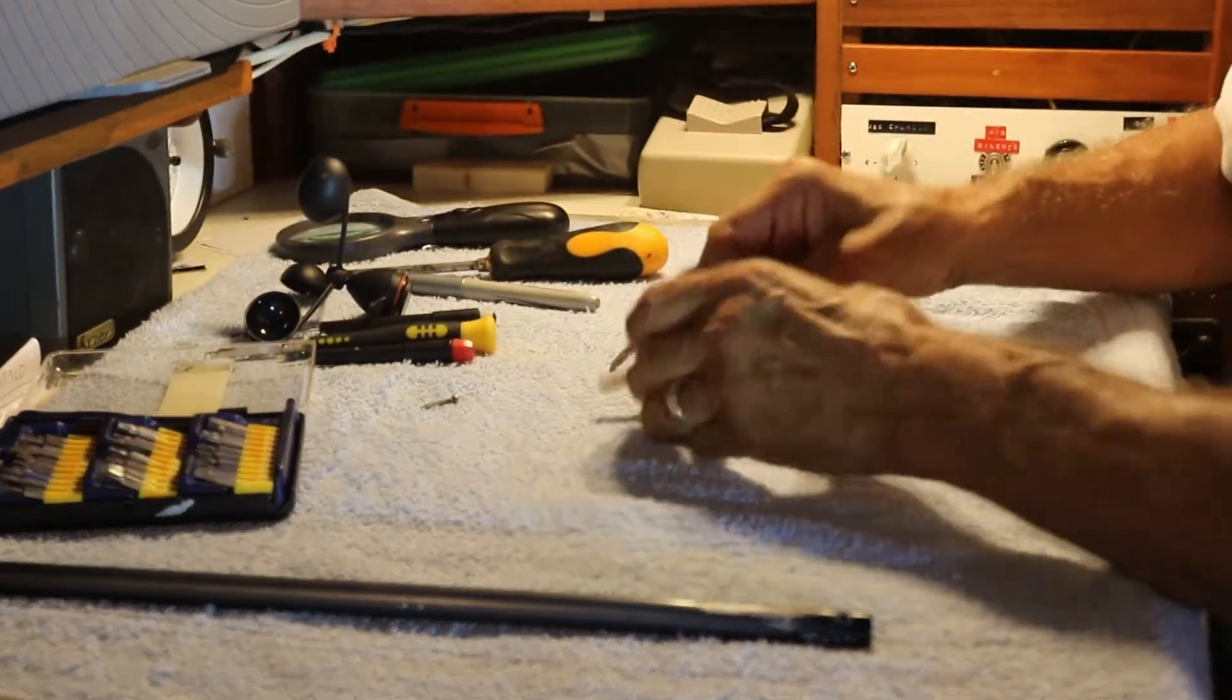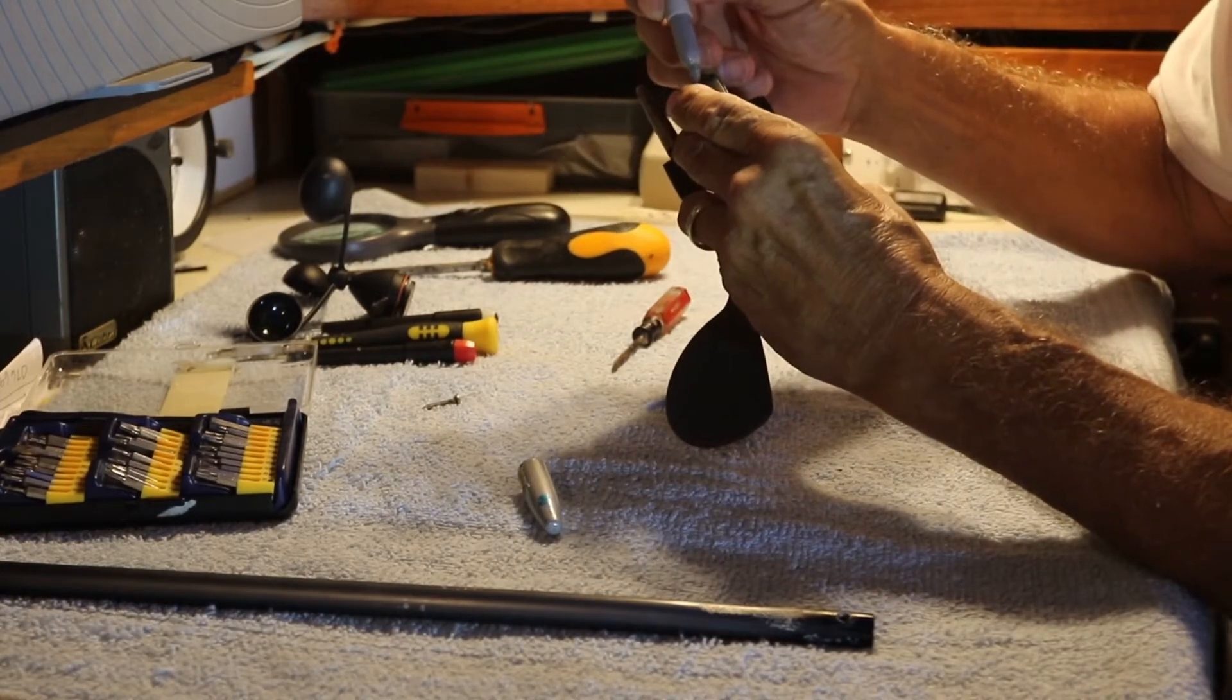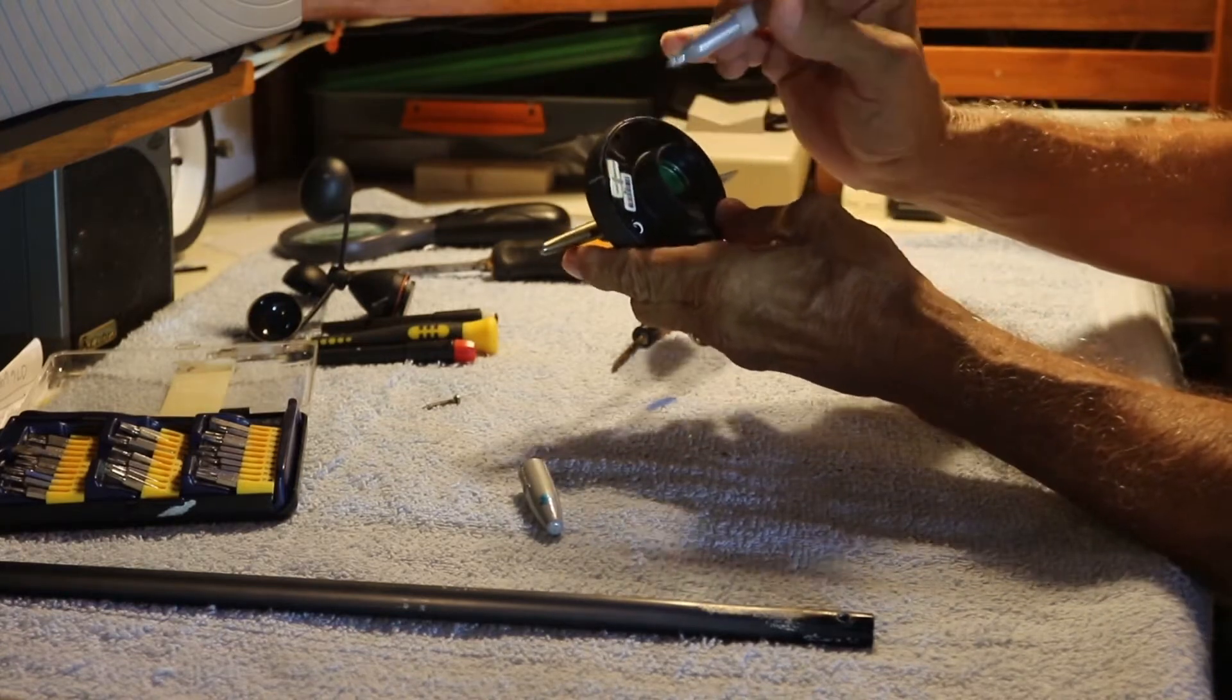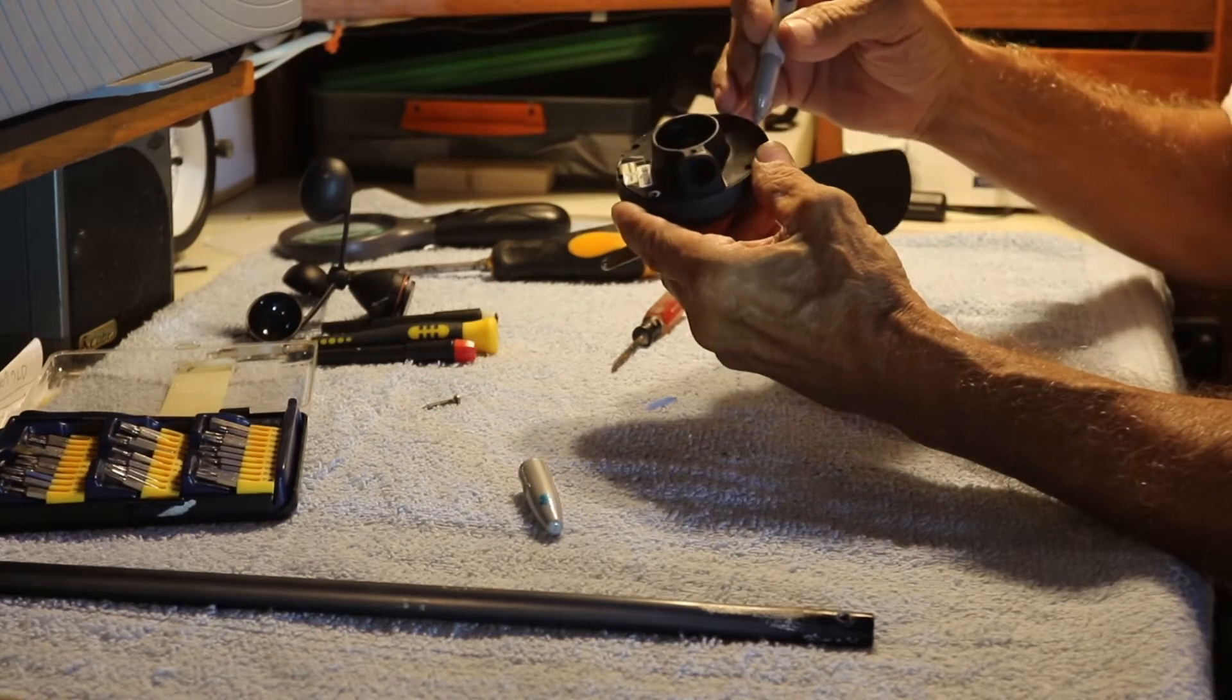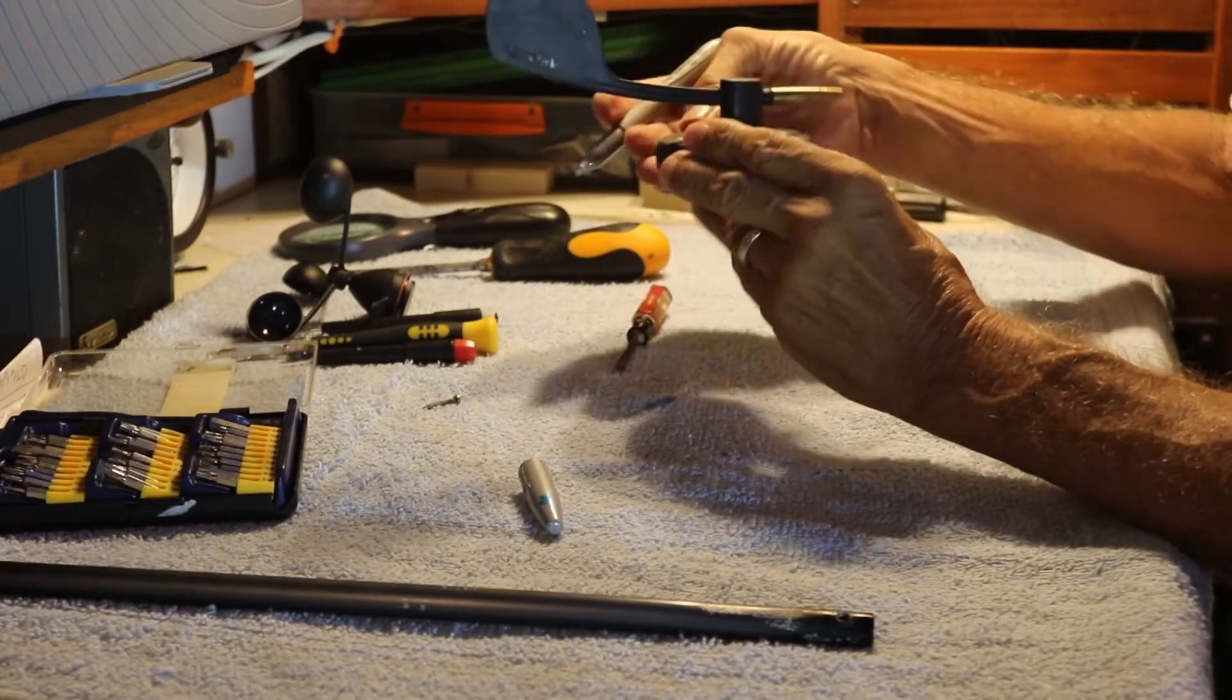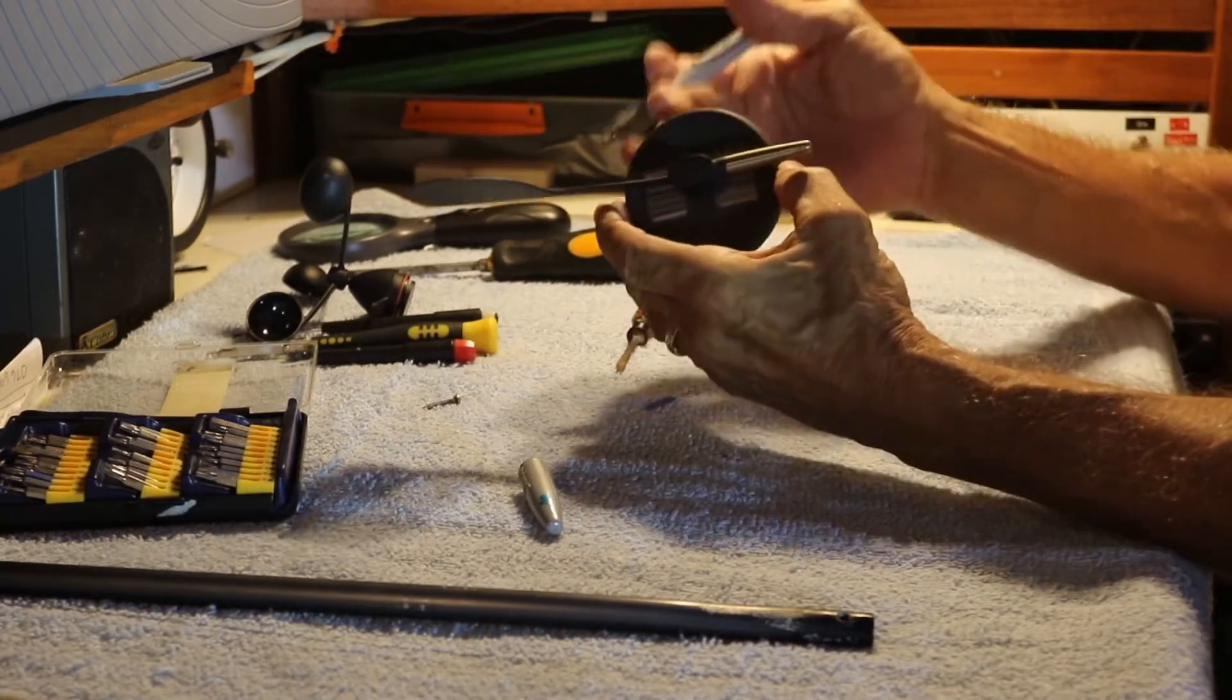Now, before we take this apart, I'm going to mark with a magic marker where everything aligns, because there's little cutouts here. So you can pry up with a screwdriver and realign things with the ears upon reassembly. And I'm going to mark on the back side here where the mount is, so I don't flop things 180 degrees.